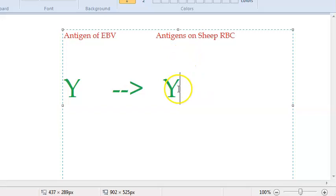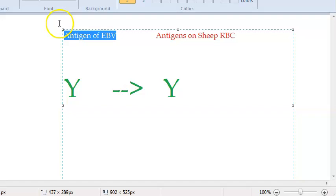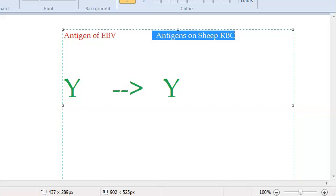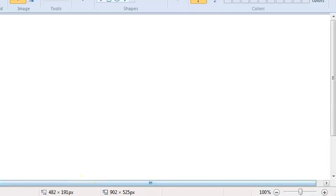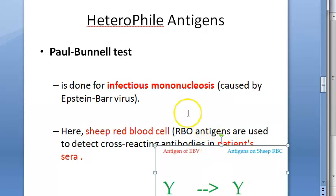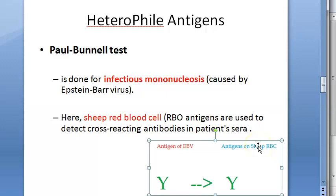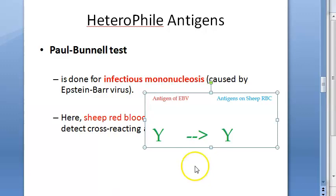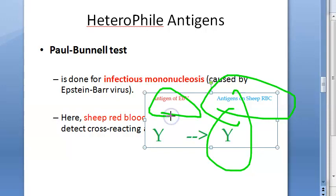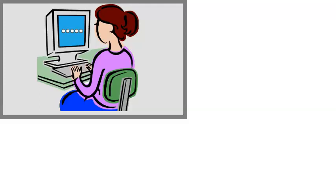You detect EBV antibodies by simply adding sheep RBCs. Sheep RBCs have antigens on them which are similar to the antigens on Epstein-Barr virus, even though the sheep is not infected with EBV. The sheep RBCs agglutinate with the antibodies made against Epstein-Barr virus. This is the Paul-Bunnell test — the advantage is you can detect infectious mononucleosis without needing to find the actual EBV antigen.